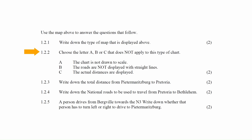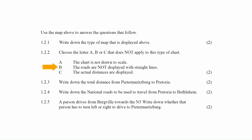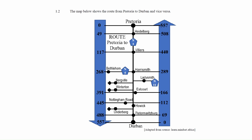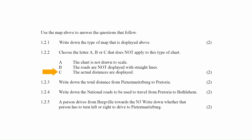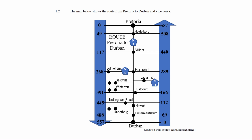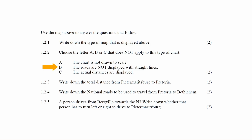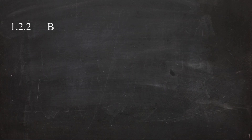In question 1.2.2 you must select the option that is not applicable to this chart. The options are: A — the chart is not drawn to scale; B — the roads are not displayed with straight lines; or C — the actual distances are displayed. Option A is applicable as strip charts are typically not drawn to scale. Option C is also accurate as the real distances are marked on the chart. However, option B is inaccurate because the roads in this chart are indeed represented with straight lines. So the correct answer is option B.